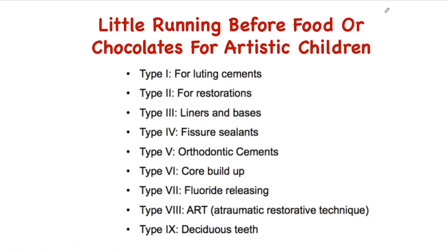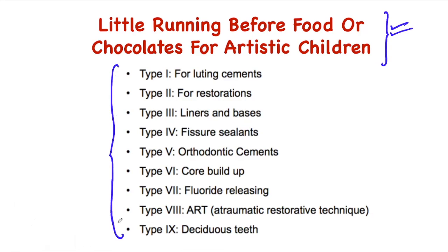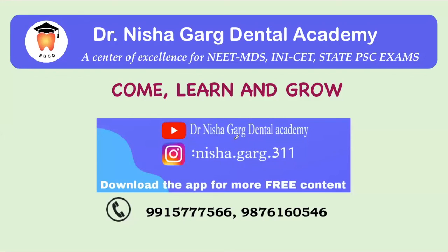So just by remembering this simple line — 'Little Running Before Food Or Chocolates For Artistic Children' — you'll be able to recall all these 9 types, which is otherwise a difficult task. I hope from now onwards it will be easier for you to remember the glass ionomer classification. Subscribe to my channel for more such videos.